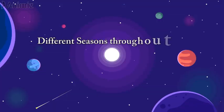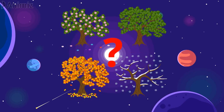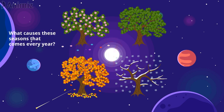We experience different seasons throughout a year which are summer, winter, autumn and spring. But the question is what causes these seasons that come every year? Well it happens because of two reasons.